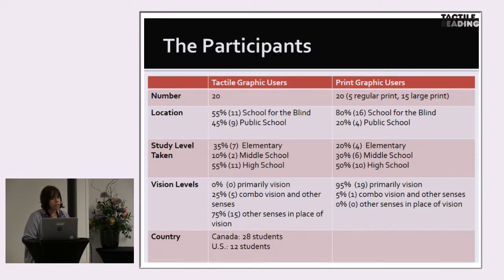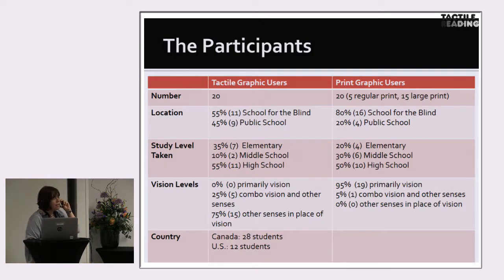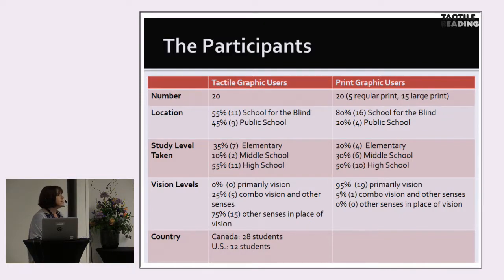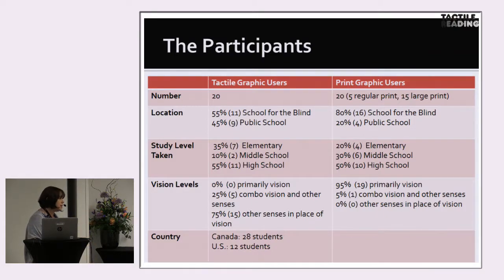Of the tactile graphics users, they were pretty evenly split between schools for the blind and public schools. The majority were at the high school level at 55%, with 10% middle school and 35% elementary school. In terms of functional use of vision, 75% were using their other senses in place of vision, with 25% using a combination of vision and other senses but still being tactile graphics users. Twenty-eight students came from Canada and 12 from the United States.